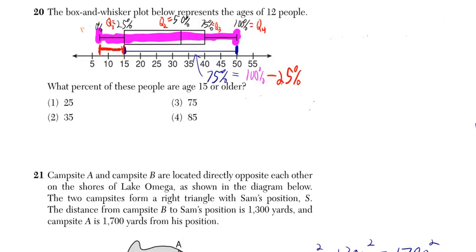Box and whisker plots give you the minimum, which in this case is about 7.5. They give you a maximum, which in this case is 50.